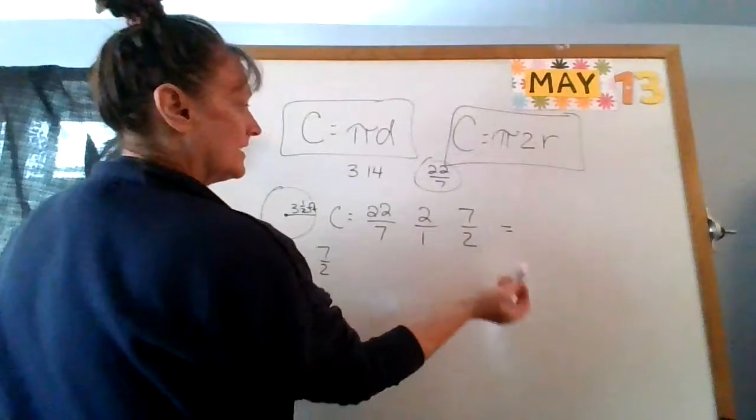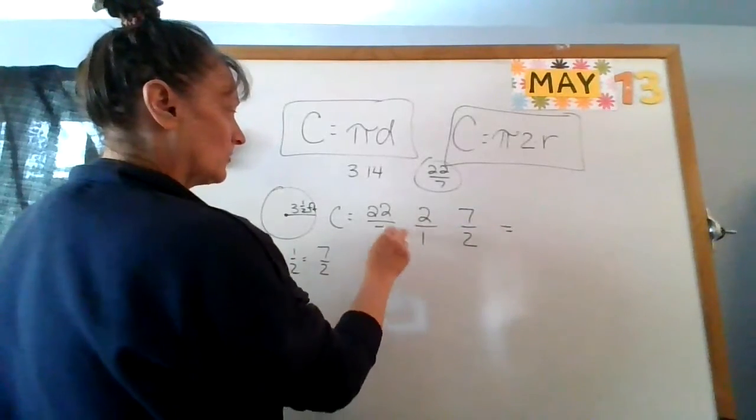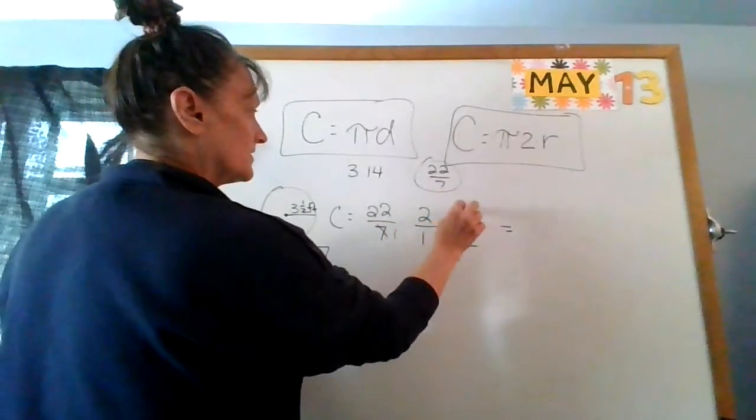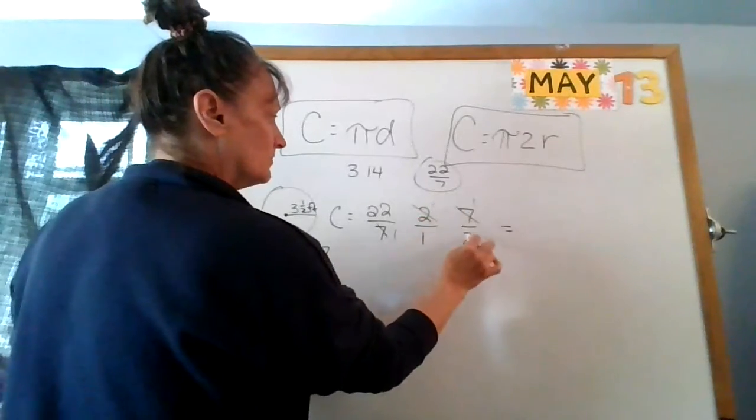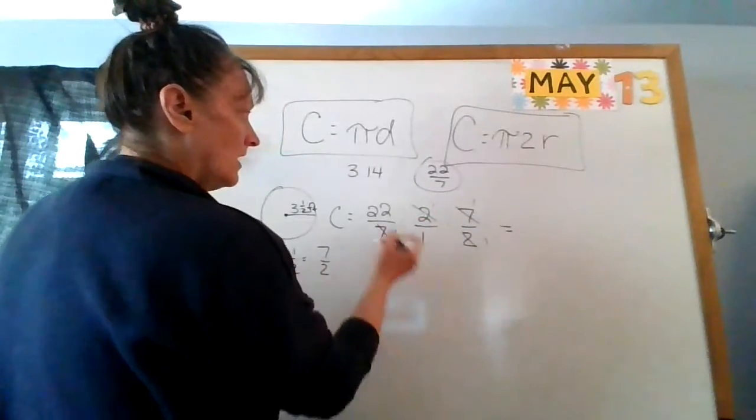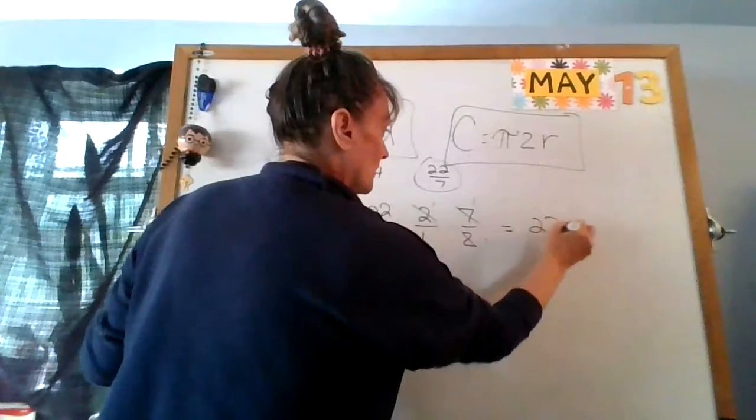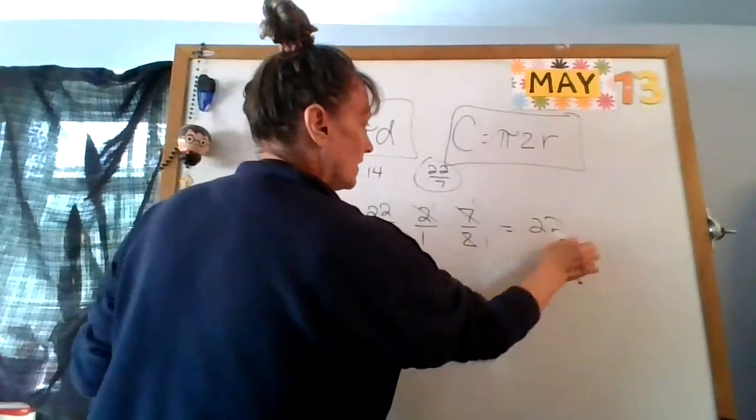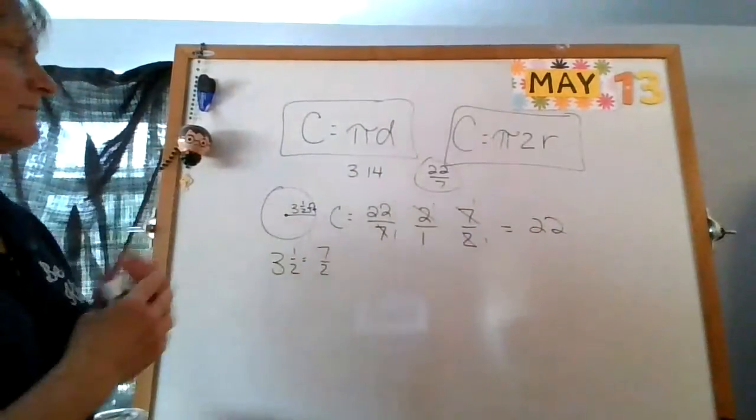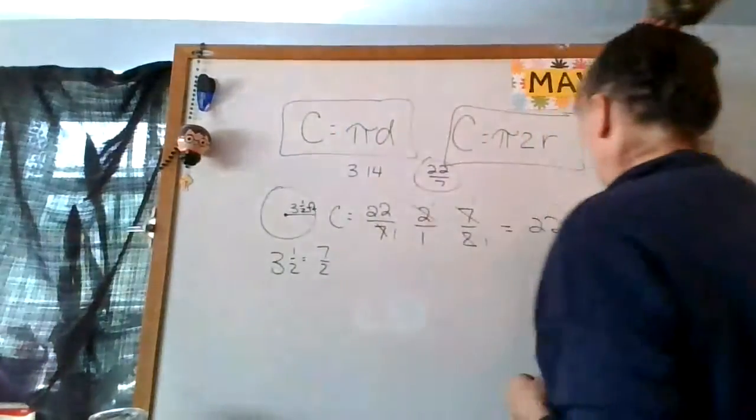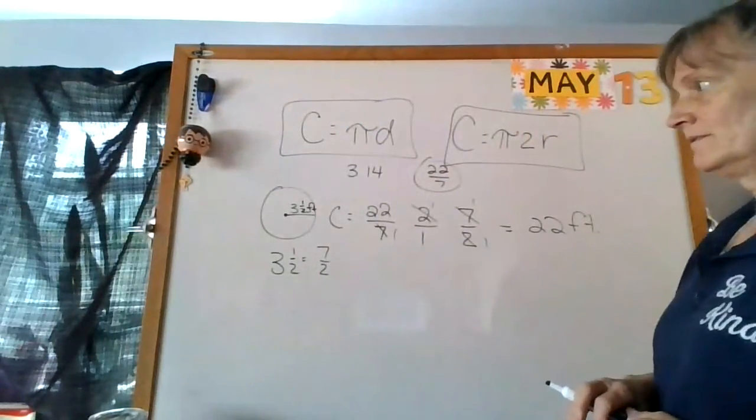Now I'm going to say is there anything that goes into each other? Seven goes into seven once, two goes into two once. 22 times 1 is 22, 1 times 1 times 1 is 1. 22 over 1 is the same as 22, so I get 22 feet.